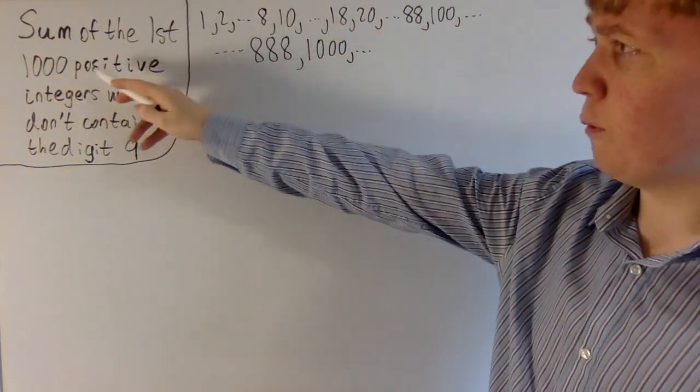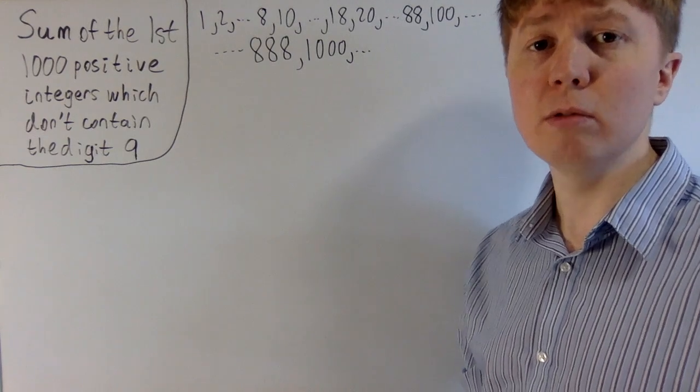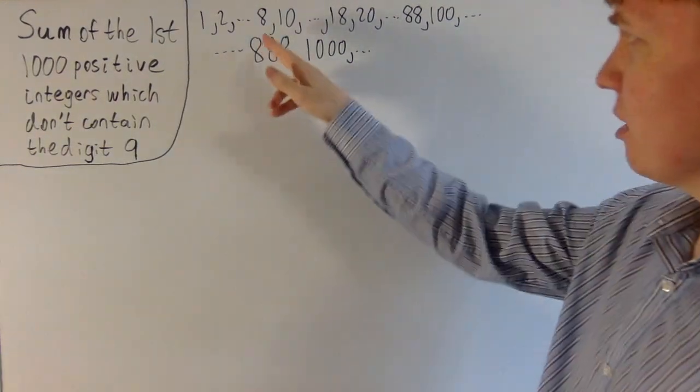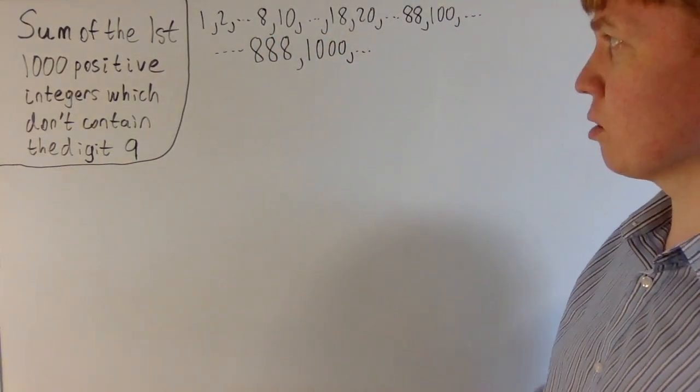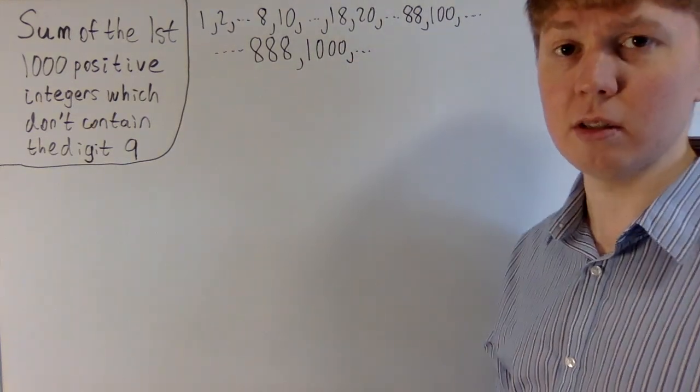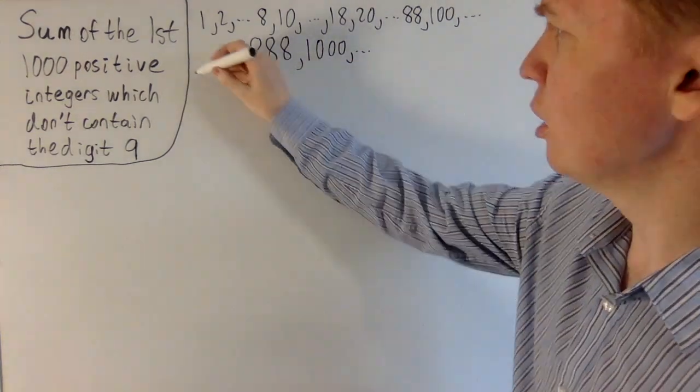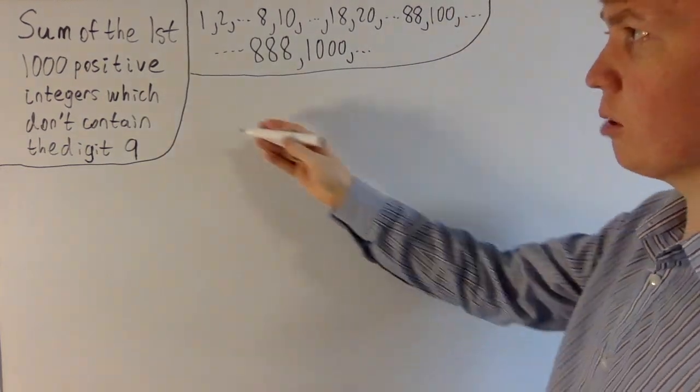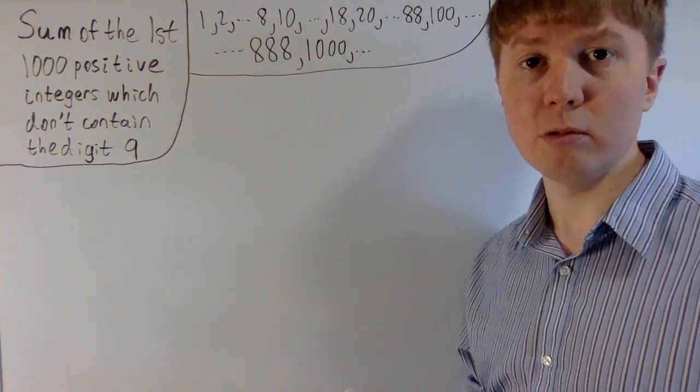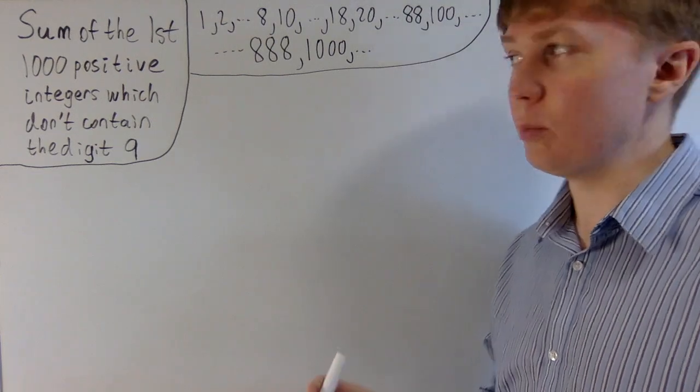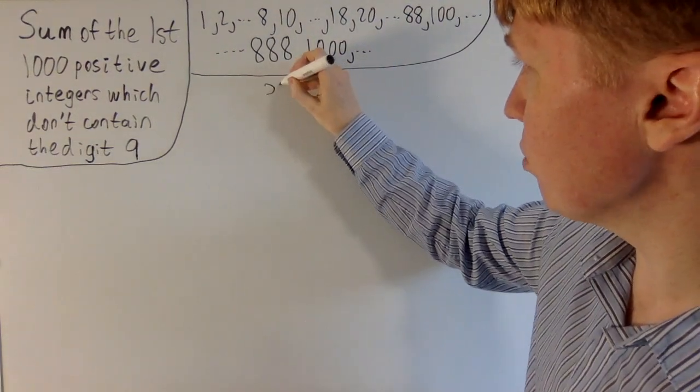Here we're trying to find the sum of the first thousand positive integers which don't contain 9s. And you can see here we've skipped loads of digits, so we're actually going to have to go beyond the 1,000. It's not immediately clear exactly what our thousandth term in this sequence is going to be, so how far we need to go. So this is just the first thing that we'll try and answer to kind of get a handle on the problem.